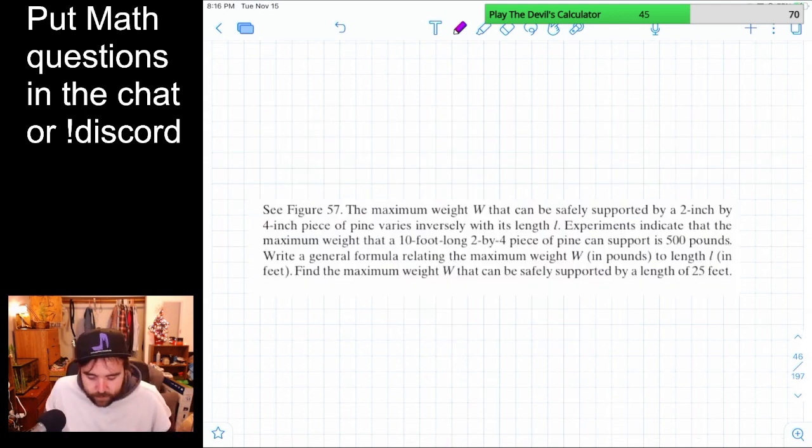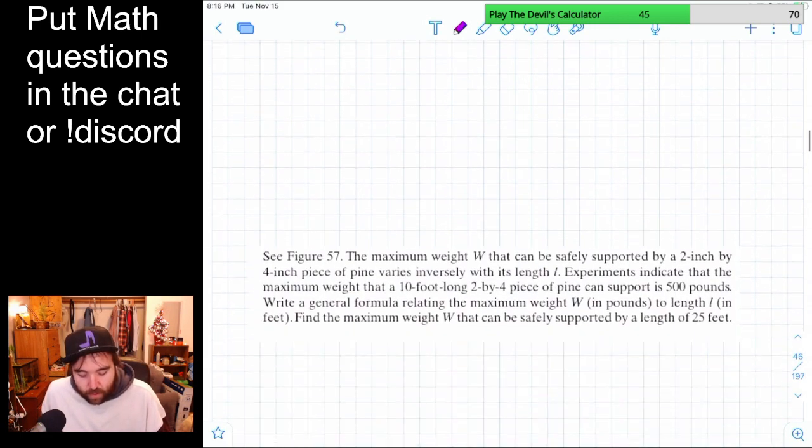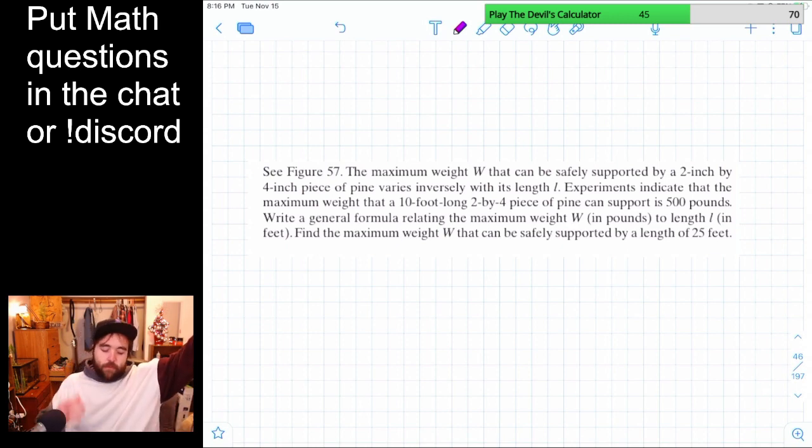So let's do this one. So the maximum weight W that can be safely supported by a 2x4 varies inversely with its length L. So think about it. Last time it just said it varies directly. Here it varies inversely. So what that means is when one of them goes up, the other one's going to go down. And then when it goes down, the other one's going to go up.